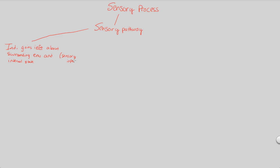That's the first step — sensory input. Once sensory input has happened, it's useless unless it is sent to the super integrator, the thing that can understand what just happened. It basically has to be processed by the central nervous system, specifically the brain. Once processed, there's going to be a messaging signal sent back to the body, resulting in the appropriate motor response, whatever that may be.